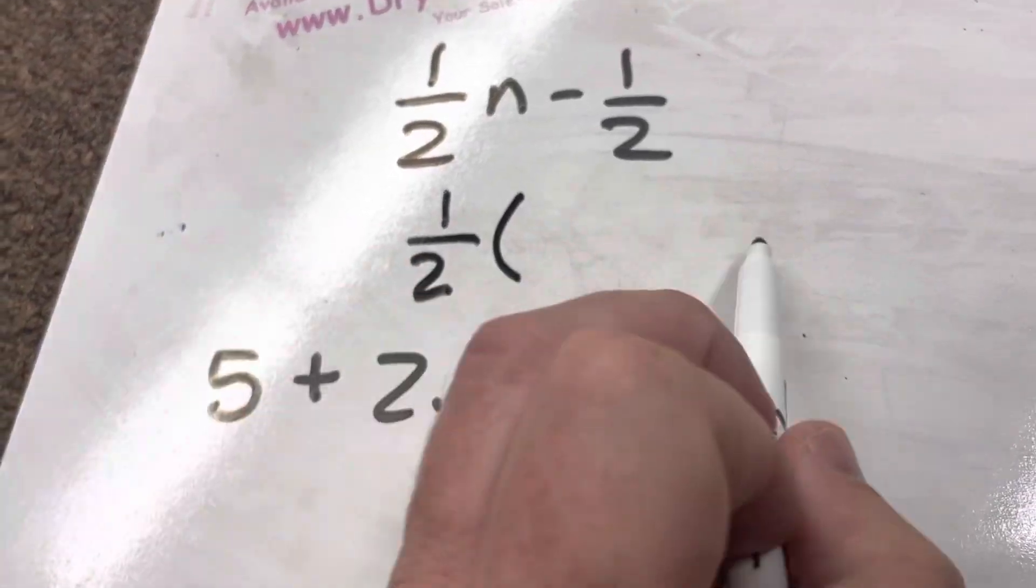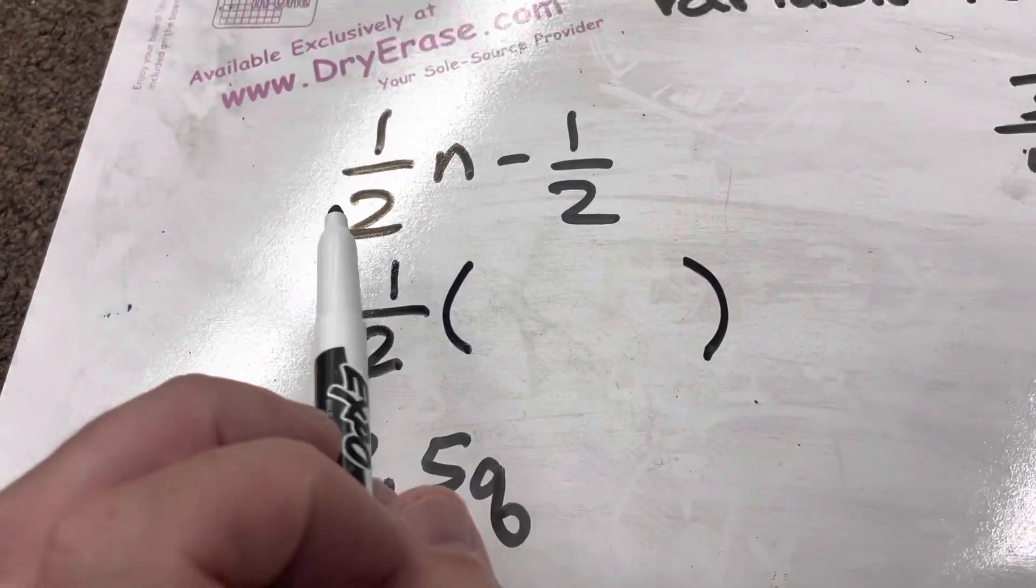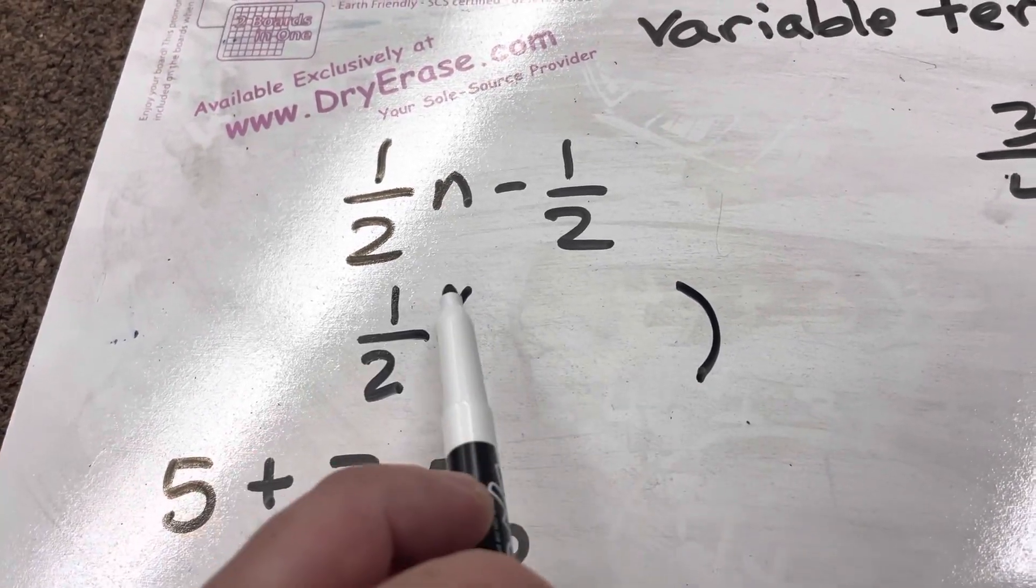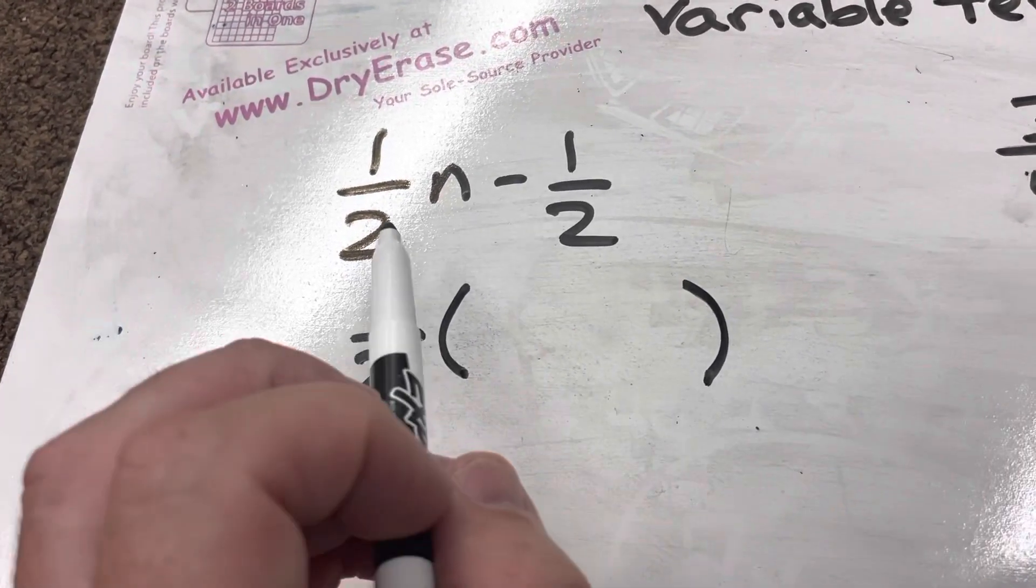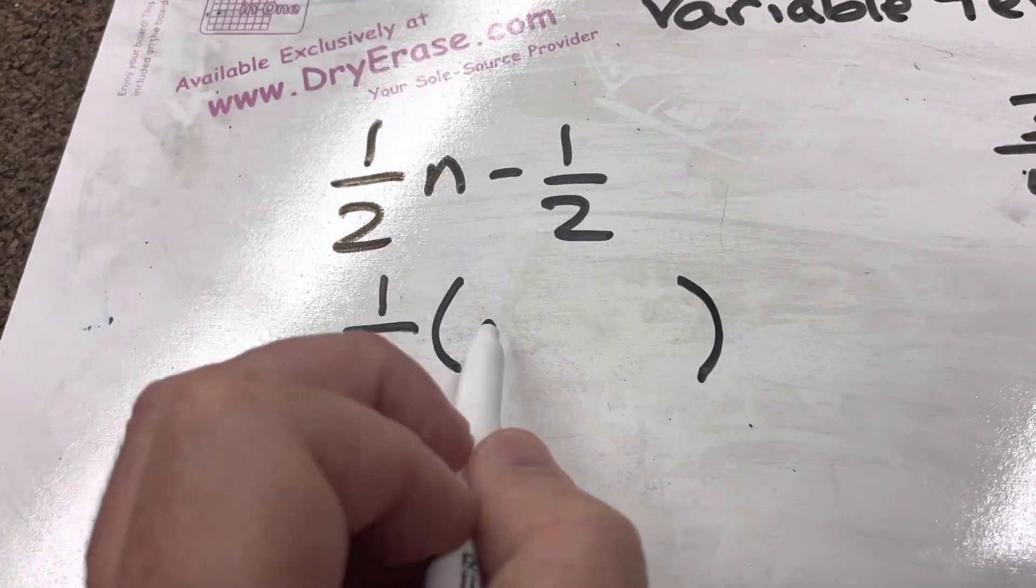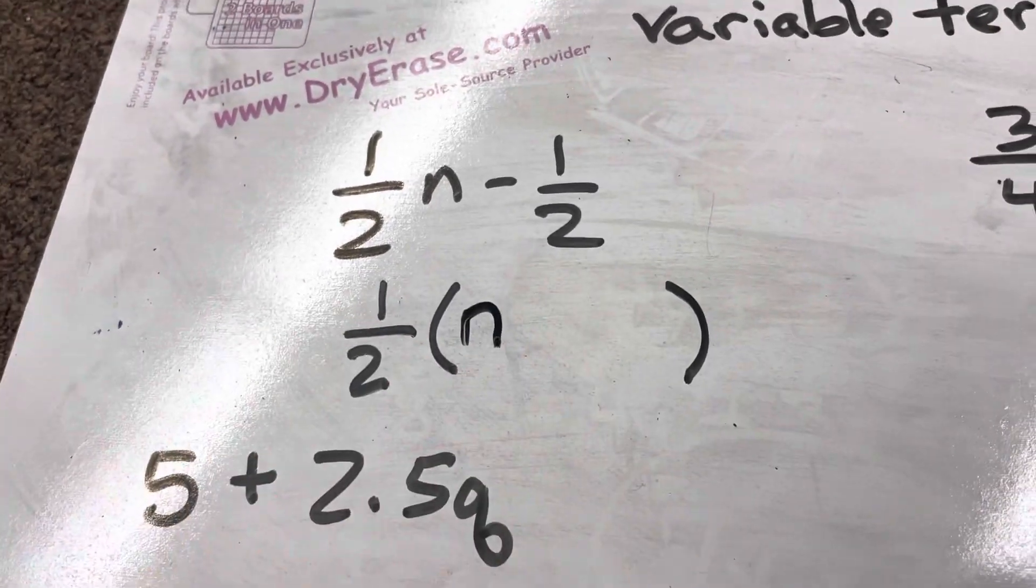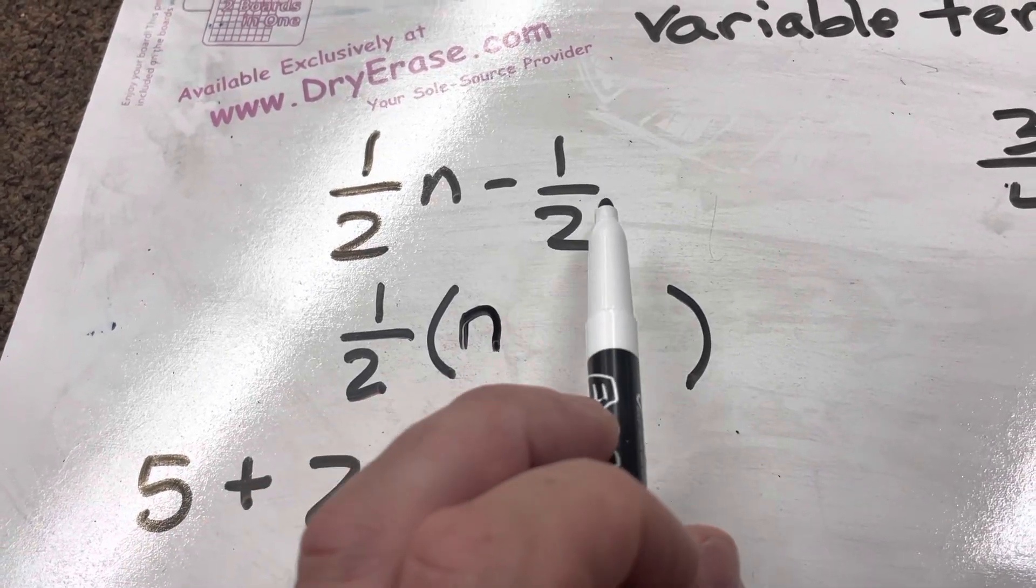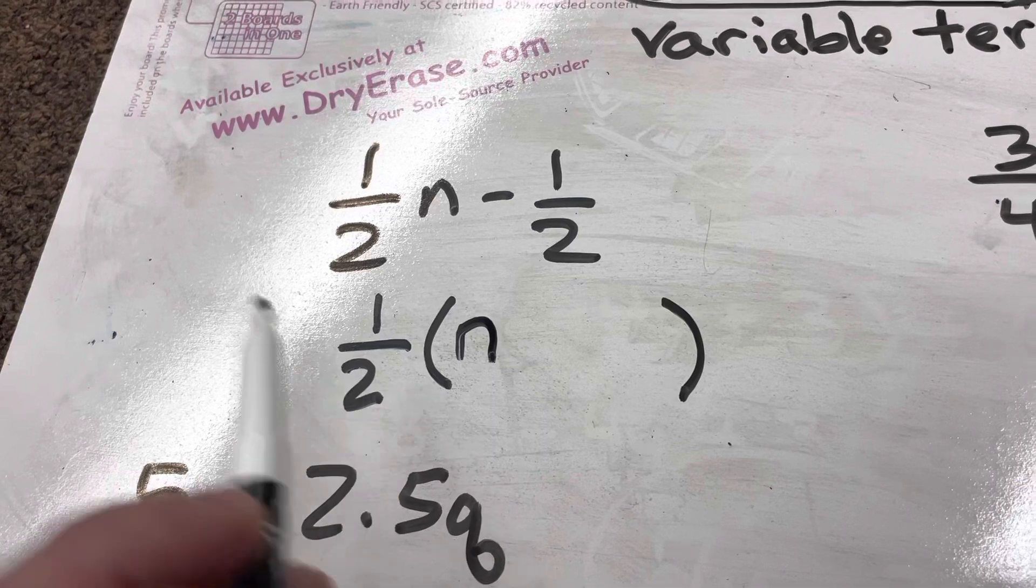And so then I'm going to say, okay, I have to multiply, or not multiply, I have to divide everything by one-half. Well, one-half n divided by one-half is just going to leave me with n. And then a negative one-half divided by one-half.